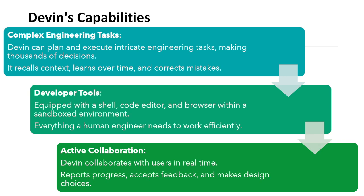Now, Devin's capabilities. It can handle complex engineering tasks — it can plan and execute intricate engineering tasks, making thousands of decisions on its own. It recalls context, learns over time, and corrects mistakes. That is the best part: it can correct mistakes on its own and recall the context. It is equipped with a shell, code editor — similar to VS Code — and a browser, all within a sandbox environment. Sandboxing is something very interesting, used in banking as well for protecting from attacks. Everything a human engineer can do, Devin can also do, and more effectively.